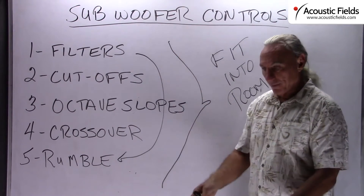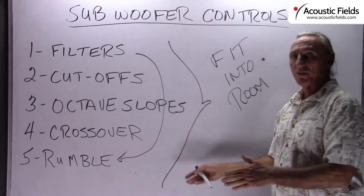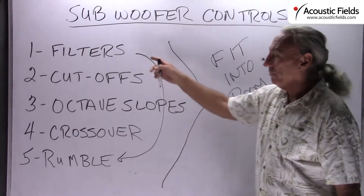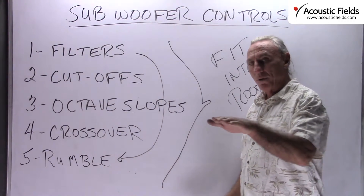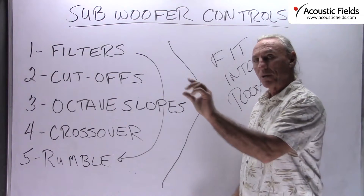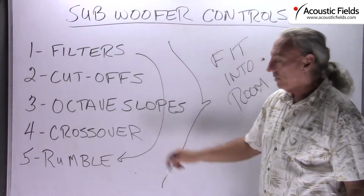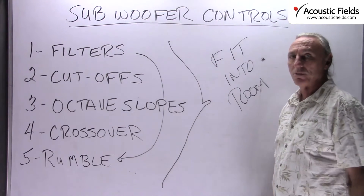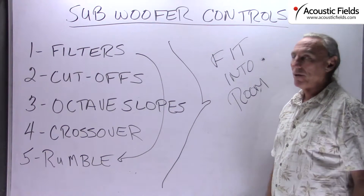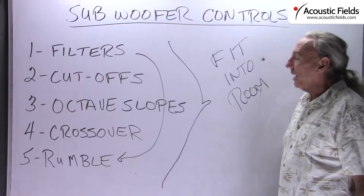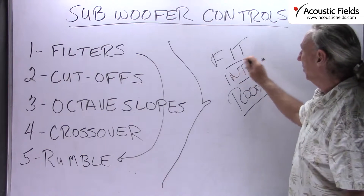Cut-offs — it's a gate: let some frequencies through, stop others. Filters, the same thing — octave slopes. We're going to let the energy through but then control all the breakpoints of that energy. Crossover: how much after this point goes where? Rumble is more of a vibrational thing inside the cabinet. But the goal is to fit into the room.